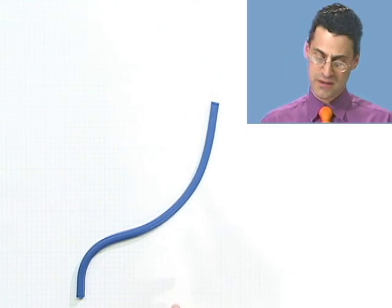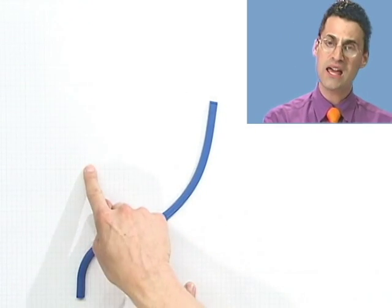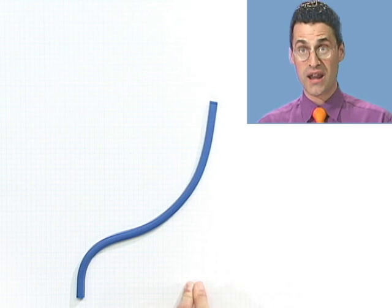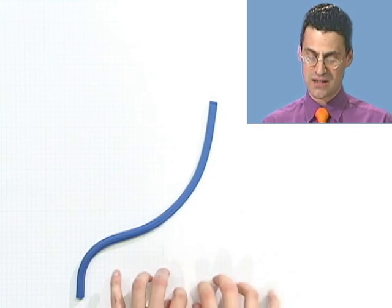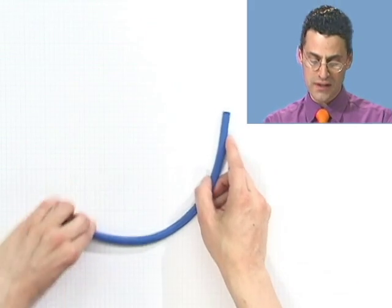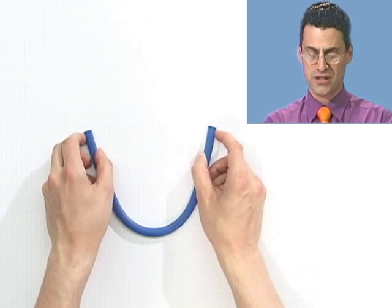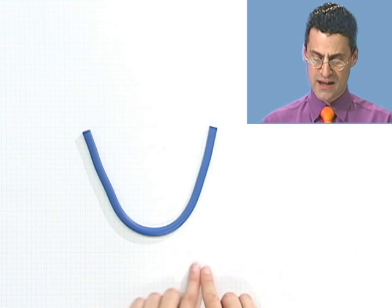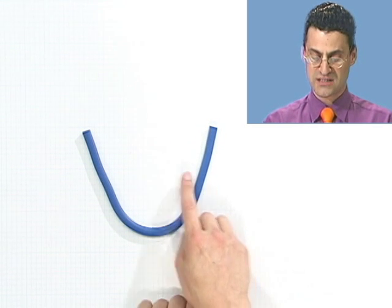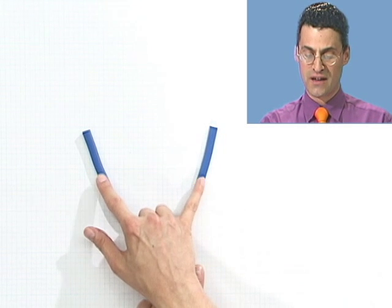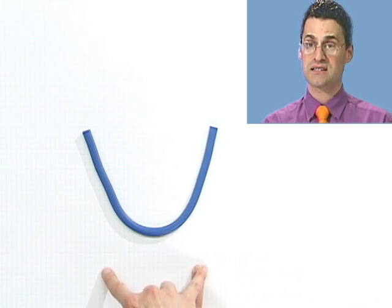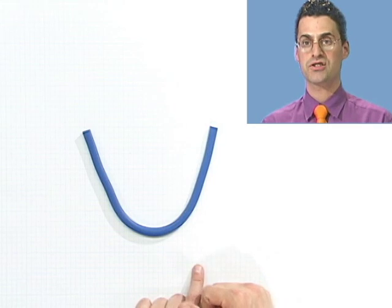That's why we call it one-to-one because one x went to one y and that one y came from that one x. There's a one-to-one correspondence, a correspondence between the points down here with the points over here. Here, this is not a one-to-one function because even though this value of x right here leads to one particular value of y, when you go backwards, that value of y came from two possible x's. This is not a one-to-one function.